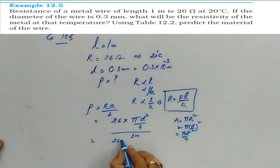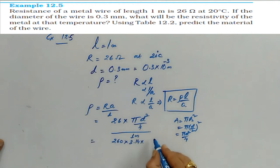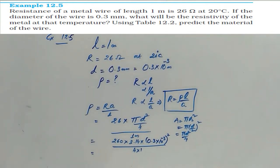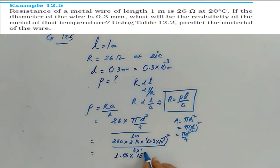So 26 into, in place of pi, you can put either 22 by 7 or 3.14 and then 0.3 into 10 to the power of minus 3 whole square by 4 into 1. If you simplify this thing, you will get 1.84 into 10 to the power of minus 6 ohm meter. So if you observe this value, it is of resistivity of manganese.